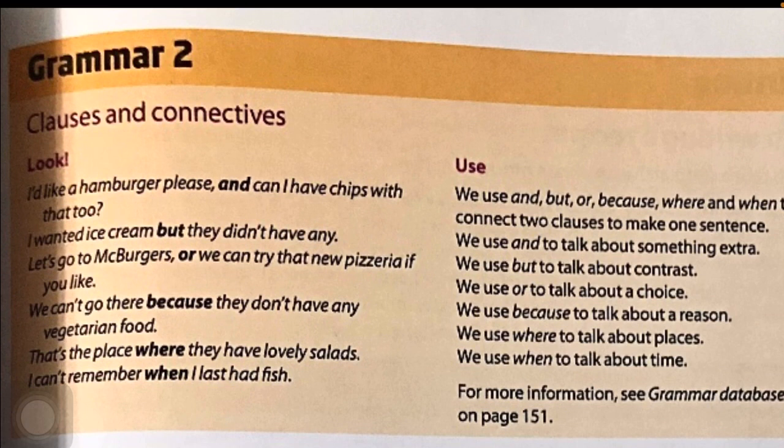We use 'where' to talk about places. Біз 'where' / қайда деген сөзді орындарды айтатын кезде қолданамыз. For example: 'That's the place where they have lovely salads.' — Ол жақсы салаттары бар жер. We use 'when' to talk about time. Біз 'when' деген сөзді уақытты айтатын кезде қолданамыз. For example: 'I can't remember when I last had fish.' — Мен соңғы рет балықты жегенімді есімде жоқ.